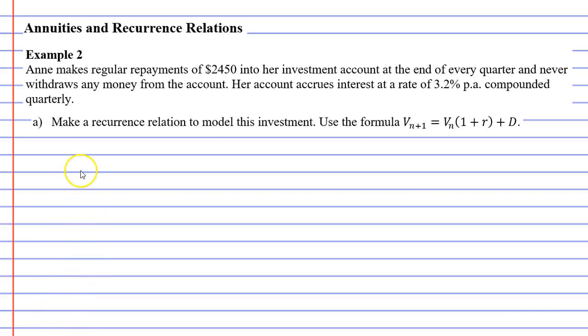In this video, we're going to complete example two. It says that Anne makes regular repayments of $2,450 into her investment account at the end of every quarter. So for now, I just want to write D because that's a repayment.